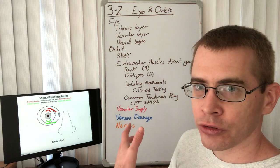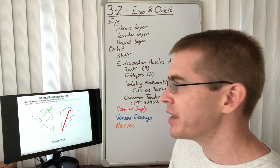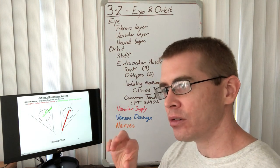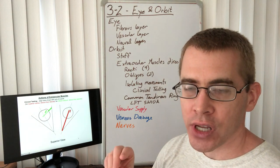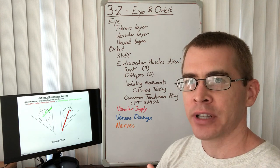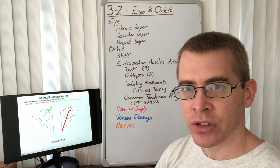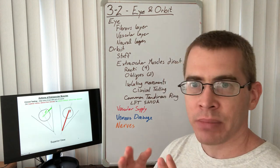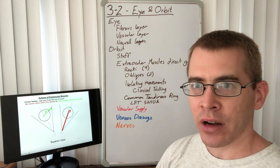This has clinical consequences when testing extraocular muscles, which is important for diagnosing strokes, intracranial pressure, or damage to the oculomotor, trochlear, or abducens cranial nerves. To isolate an individual muscle, the eye must be aligned with the angle of pull of that muscle — aligned with the angle of the orbit.